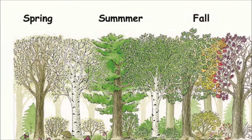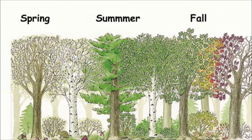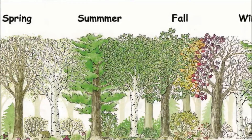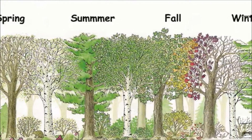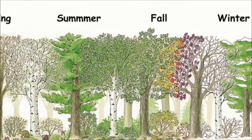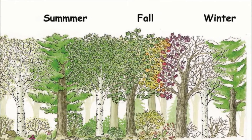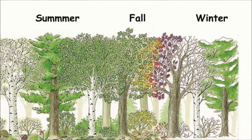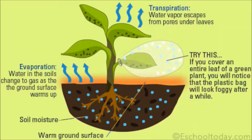Many trees, such as the teak tree, have developed numerous methods to conserve water as a result of the dry season. A large majority of trees drop their leaves because having leaves is very costly when water resources are limited. A large amount of moisture can be lost through evapotranspiration, so the trees lose their leaves in order to conserve as much water as possible.